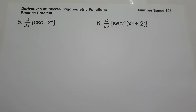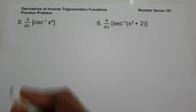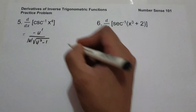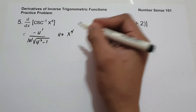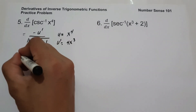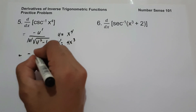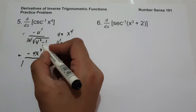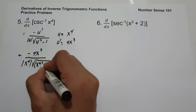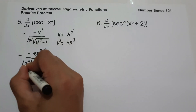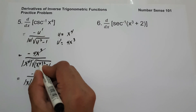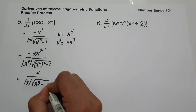On number 5, what is the derivative of arc cosecant of x raised to 4? The derivative of arc cosecant is negative u' over absolute value of u times square root of u squared minus 1. So u equals x to the 4, and u' is 4x cubed. Substituting gives negative 4x cubed over absolute value of x to the 4 times square root of x to the 4 squared minus 1. We can cancel x cubed with x to the 4, giving negative 4 over absolute value of x times square root of x to the 8 minus 1. And this will be our answer.